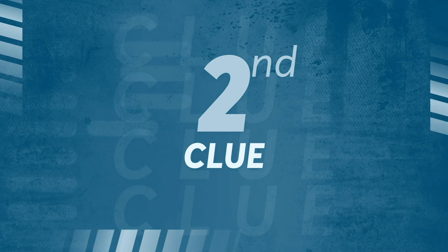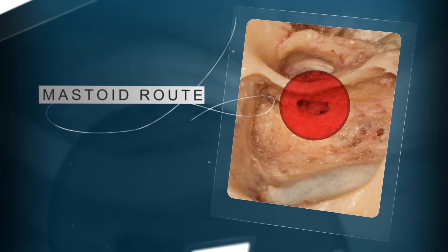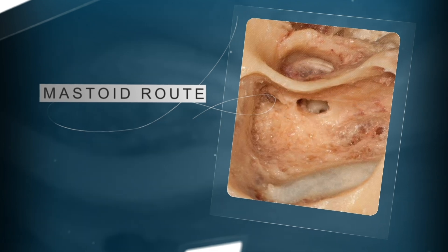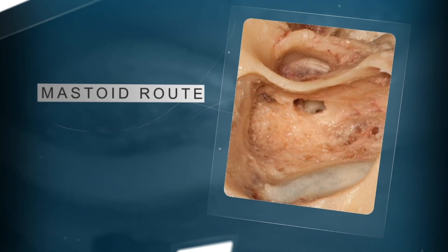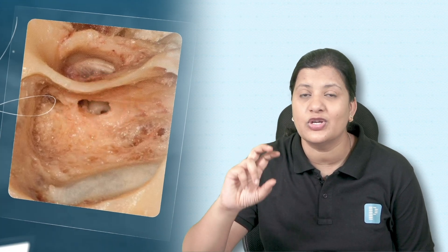Clue number two: this area is used as an approach to reach the middle ear through the mastoid route. Commonly we reach the middle ear through the external auditory canal, but if we go through the mastoid, we use this area as an approach to reach the middle ear from the posterior route or mastoid route.